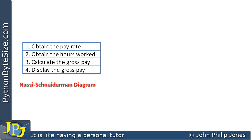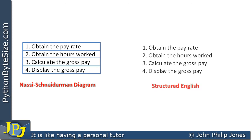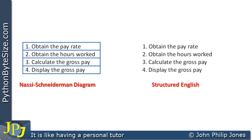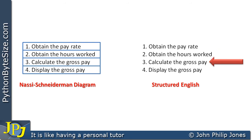That's an illustration of a Nassi-Snyderman chart showing the stages, and you can see there are no arrows in between — it's understood that you go to each step in turn. A programmer would also use structured English, which we can see has the four steps: obtain the pay rate, obtain the hours worked, calculate the gross pay, and finally display the gross pay. These are more or less the same and pretty similar to the flowchart.